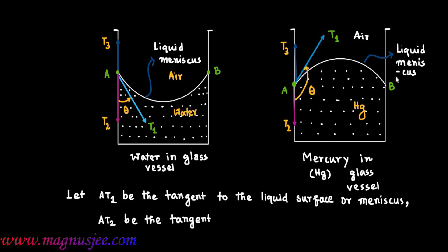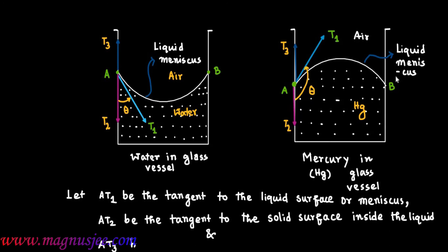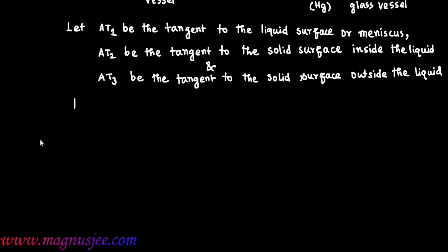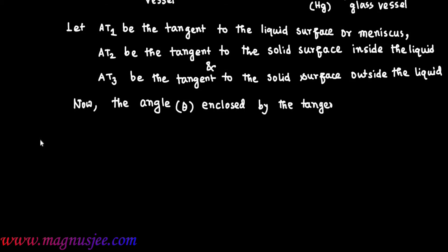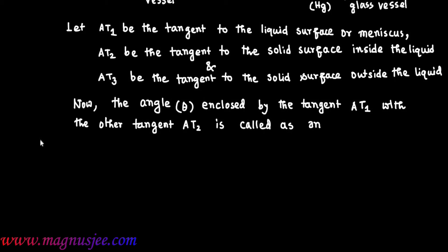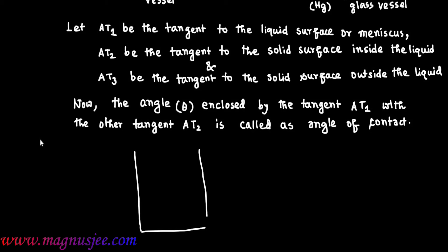T2 is the tangent to the solid surface of the container inside the liquid, and T3 is the tangent to the solid surface of the container outside the liquid. The angle theta enclosed by tangent T1 with tangent T2 inside the liquid is called the angle of contact.